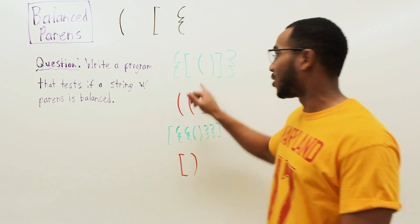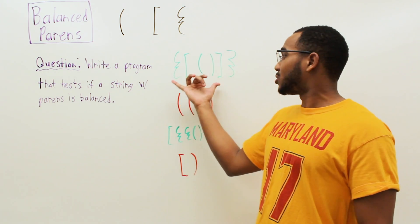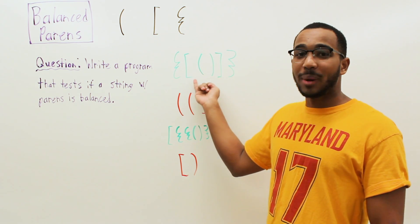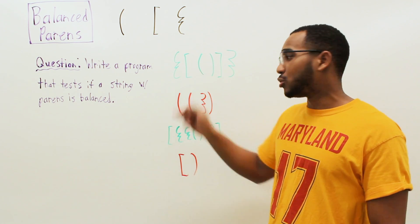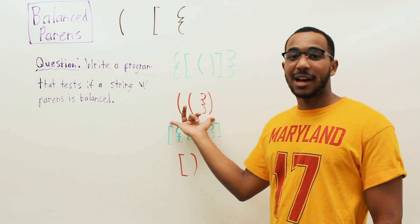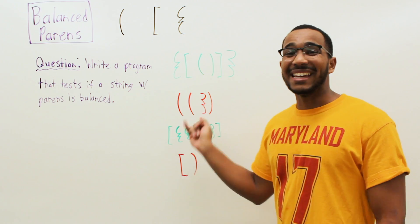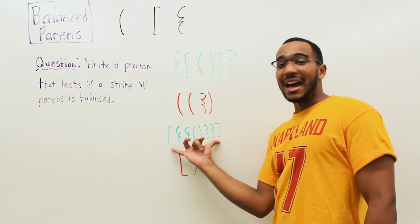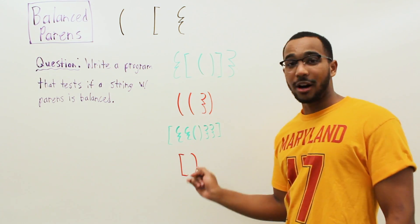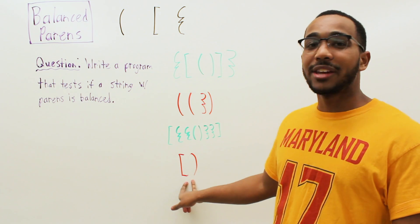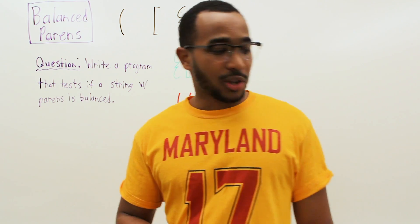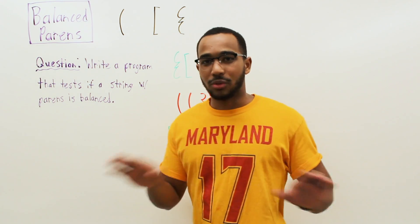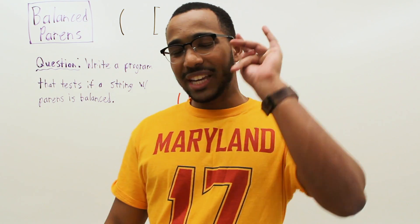For example, this string is balanced — you can see these two brackets pair up, these two pair up, those two pair up. This string is not balanced — the outside two pair up but the inside two do not. And here, some pairs match but these do not pair up. So we know this is a classic stack problem. That makes sense, but I want to go through the intuition.